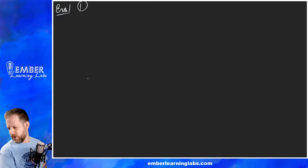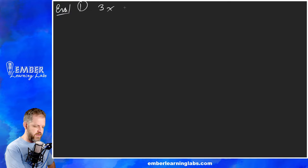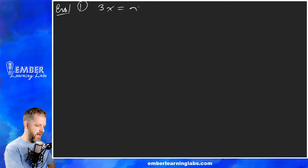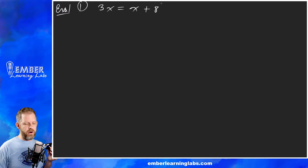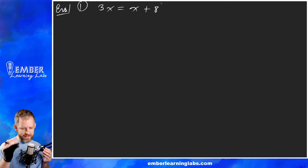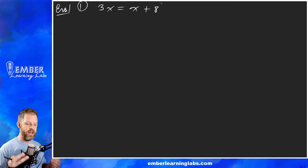Example one: solve — 3x equals x plus 8. So we've got some cleanup to do. This is part of that half-step: clean up, then ask what's attached and how it's attached, and do the opposite to get rid of it.